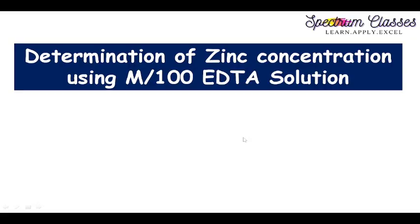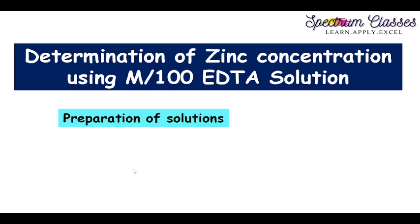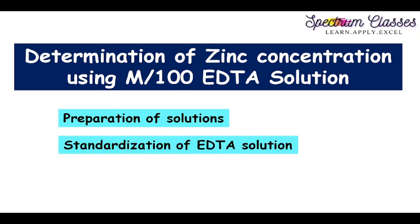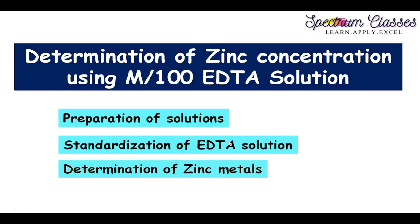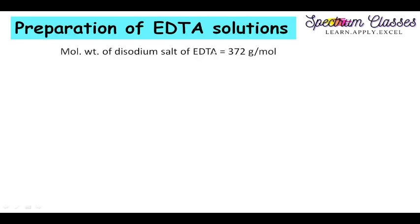Hello everyone, welcome back to Spectrum Classes. In this video we are going to determine the concentration of zinc in a given solution with the help of M/100 EDTA solution. We are going to perform a lab activity in which we will do a titration. For that purpose we need to prepare some solutions, including the EDTA solution which we will standardize, and with that standardized EDTA we will determine the concentration of zinc.